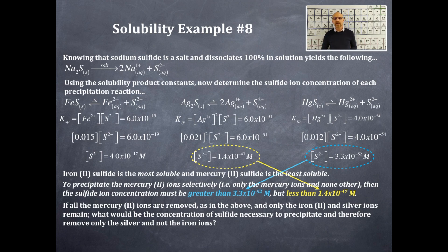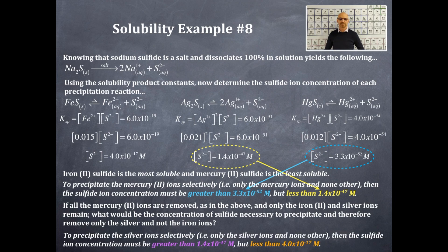If all the mercury 2+ ions are removed, as in the above example, and only the iron 2+ ions and silver ions remain, what would be the concentration of the sulfide necessary to precipitate and therefore remove only the silver and not the iron ions? Again, this is a very costly procedure, so we want to make sure that we maximized our cost ratio benefit here.